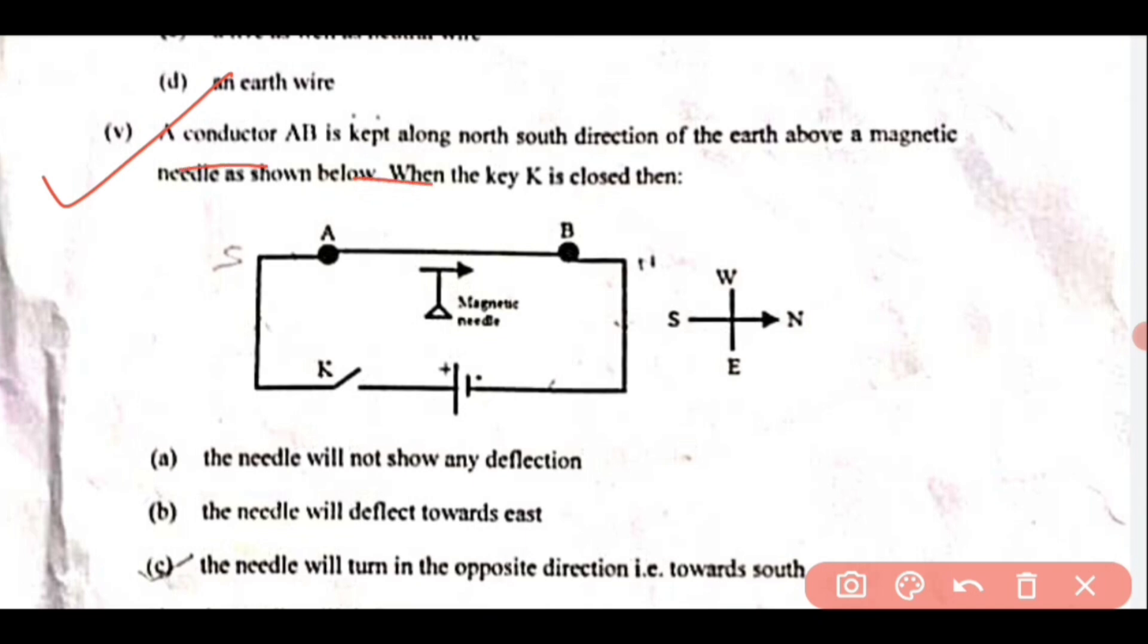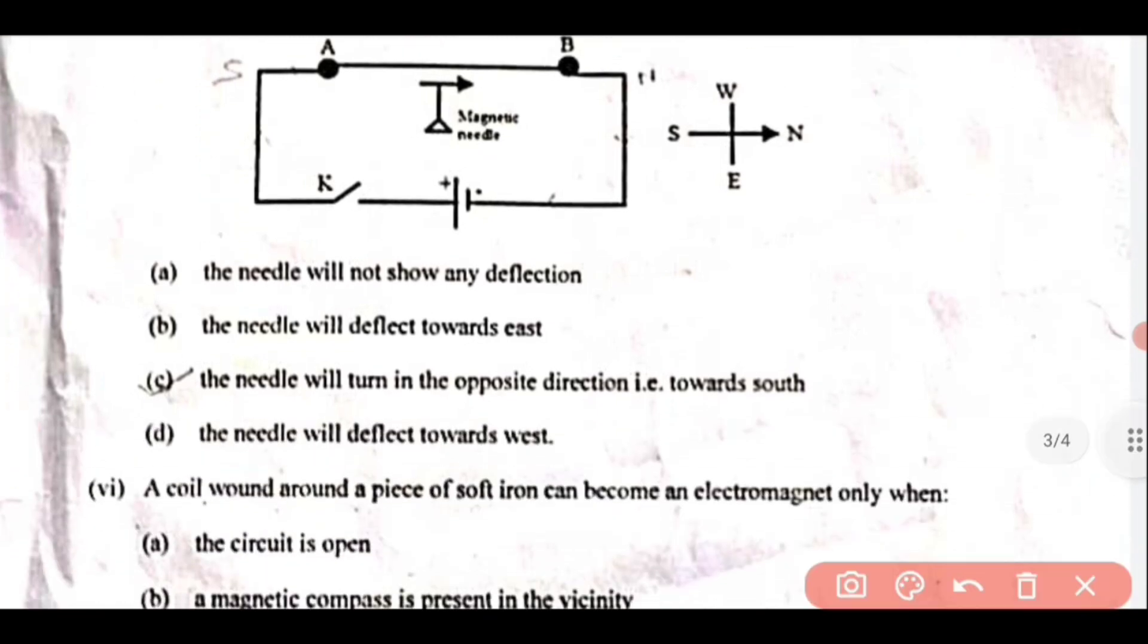Question 5: A conductor AB is kept along north-south direction of the earth above a magnetic needle as shown in the figure. When the key is closed, what will happen? The needle will deflect towards west. So option D is the correct answer.